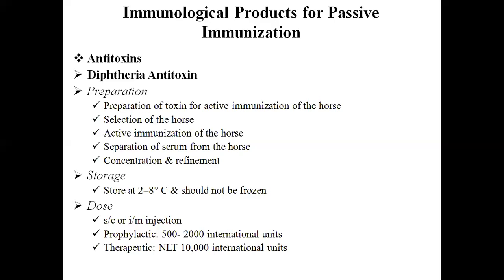Diphtheria antitoxin, as per the Indian Pharmacopoeia, is a colorless, faintly yellow, or slightly opalescent liquid. The preparation of diphtheria antitoxin involves many stages — notably five different stages.